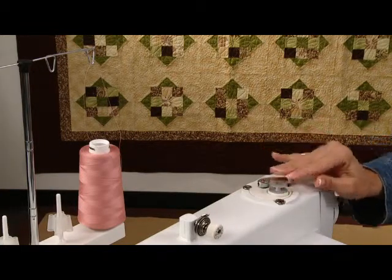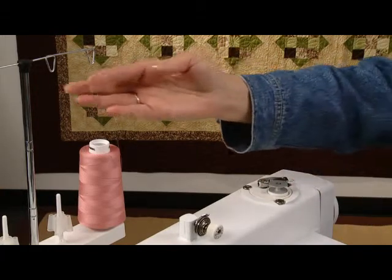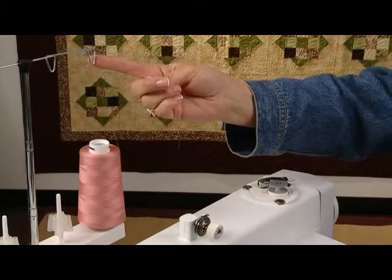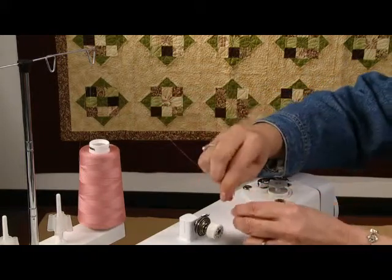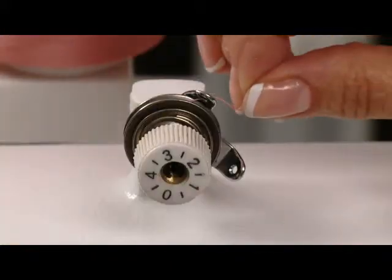We're going to place it on our bobbin holder. Bring your thread through the top loop directly above your spool of thread, through the top hole of your thread guide.